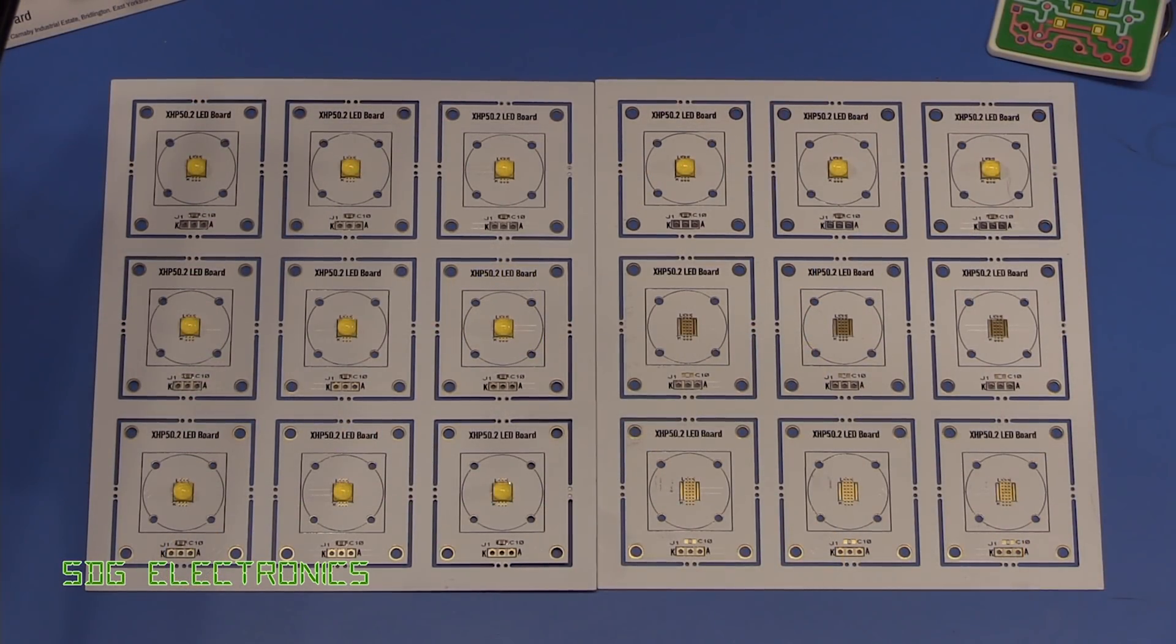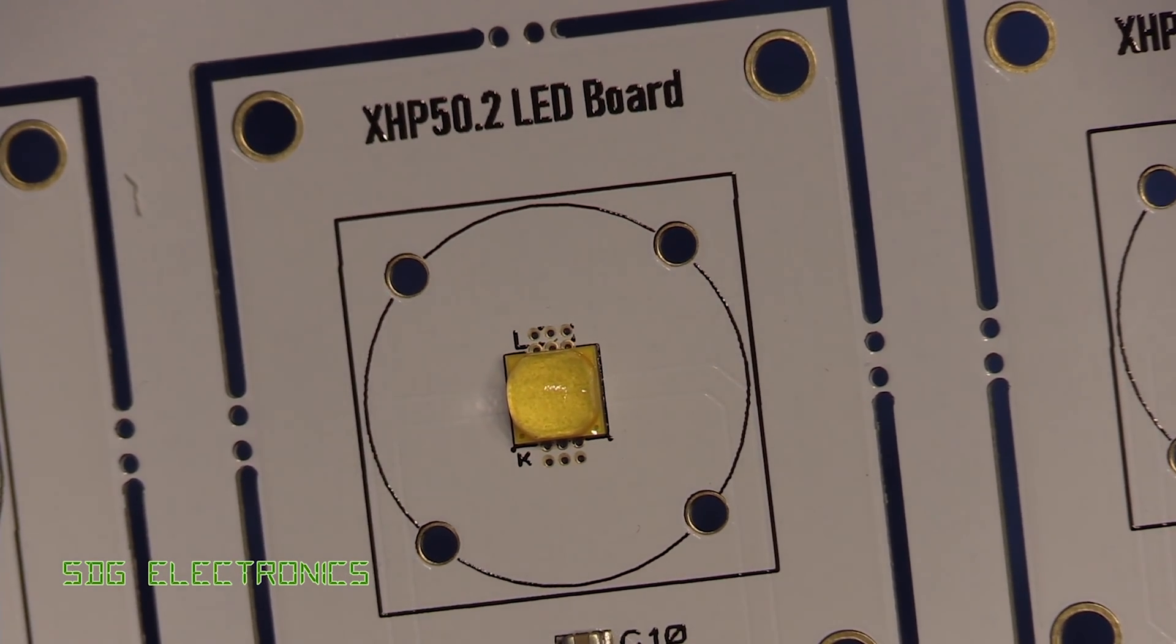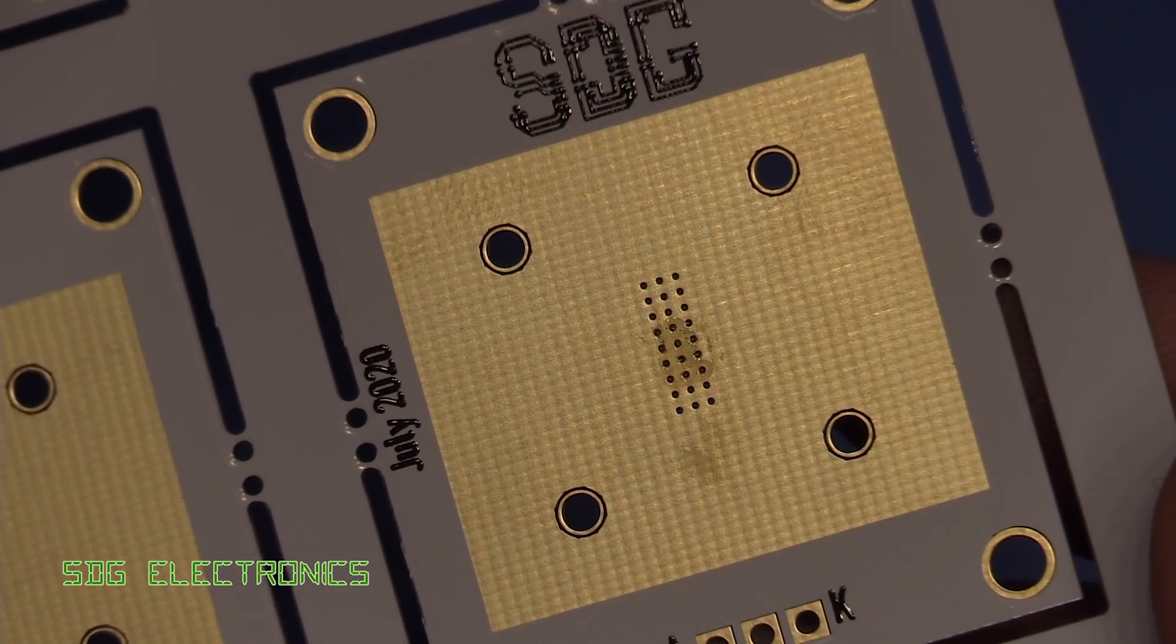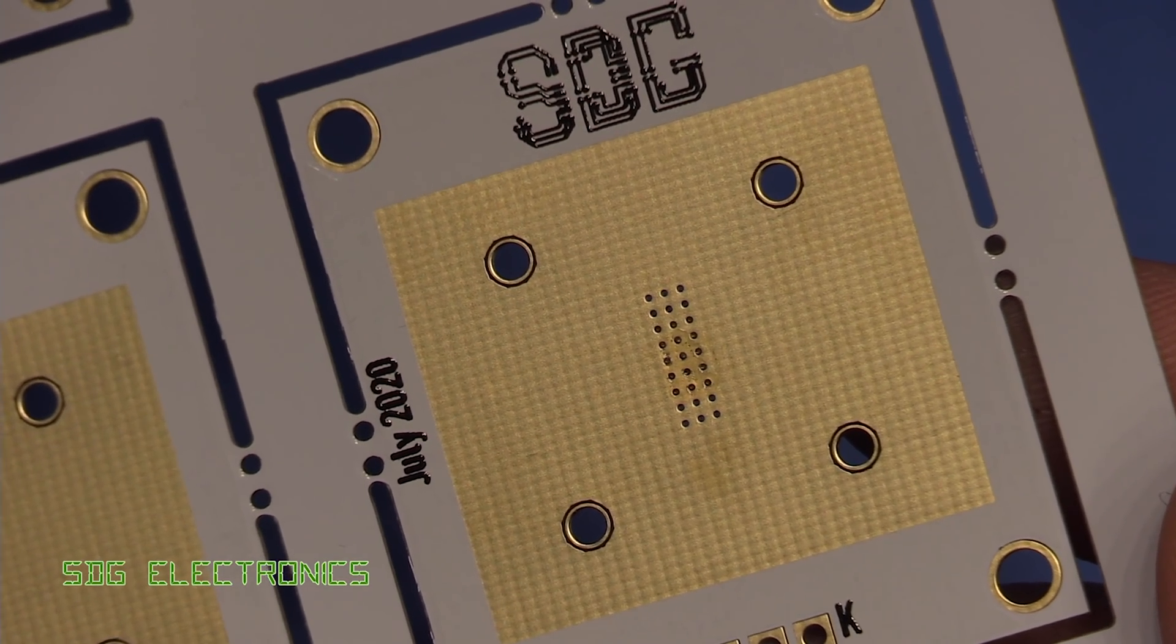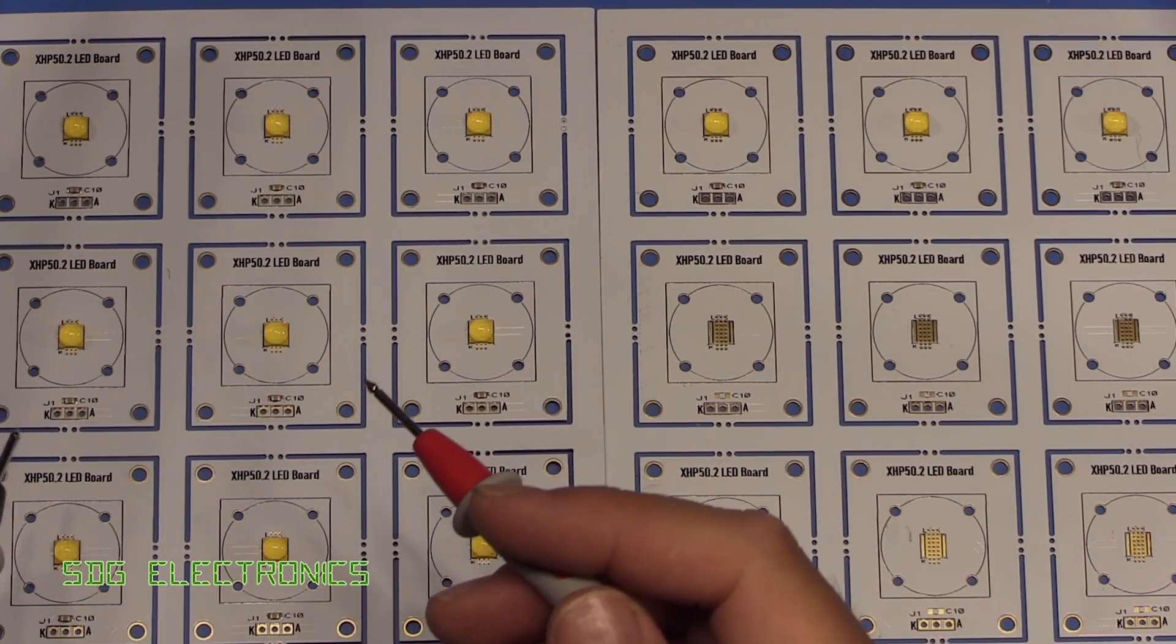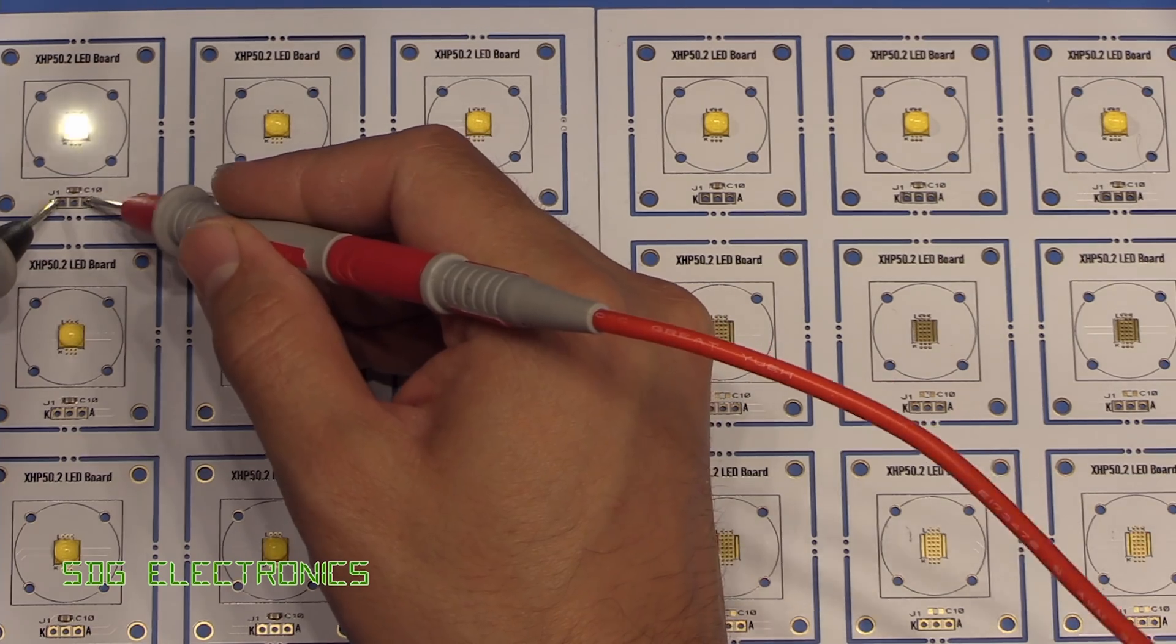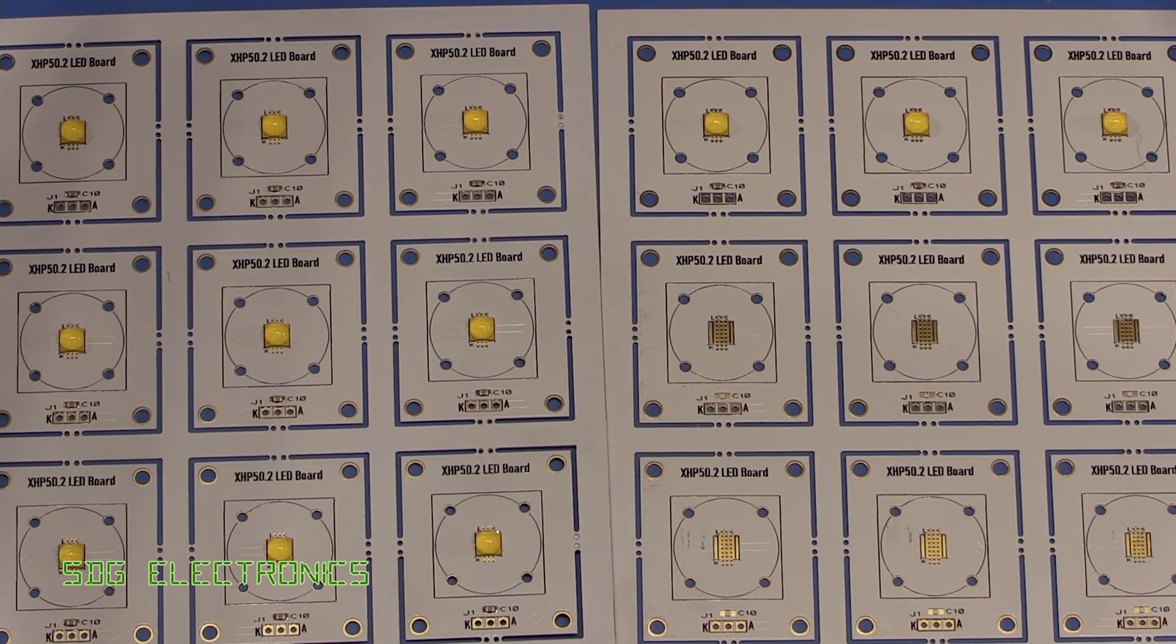So there's our LEDs all soldered up. Everything is nicely lined up on the top side. And on the rear, you can see we've barely had any bleed through of the solder paste. So I'm quite happy with how that's turned out. Let's quickly check that all of the LEDs are working. And we're just using the bench power supply set to about six and a half volts and 20 milliamps. So yeah, that all looks good.